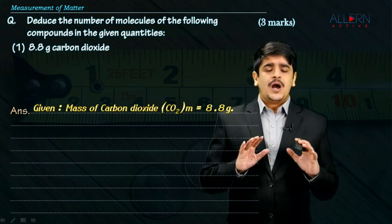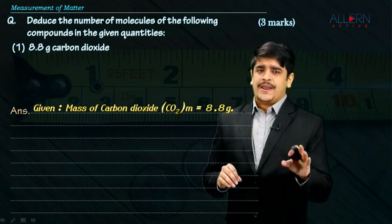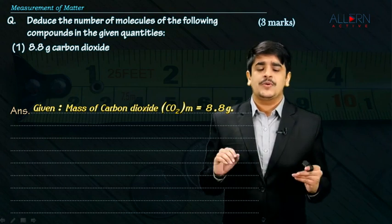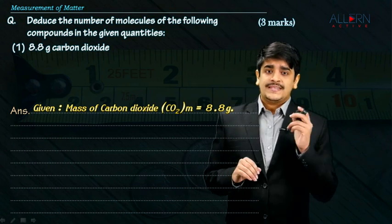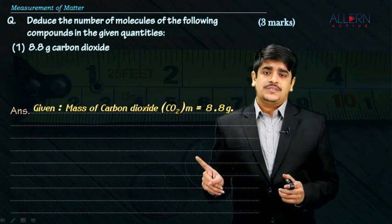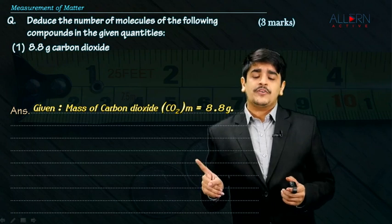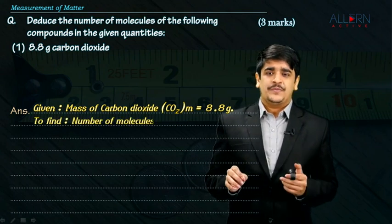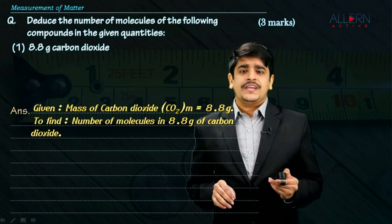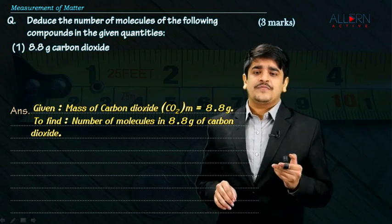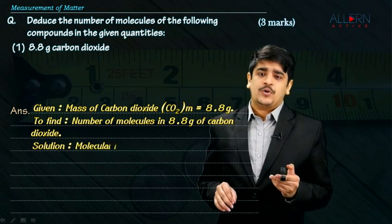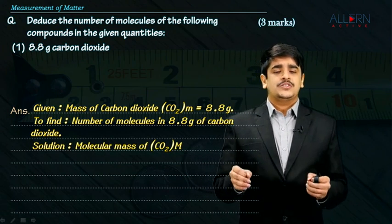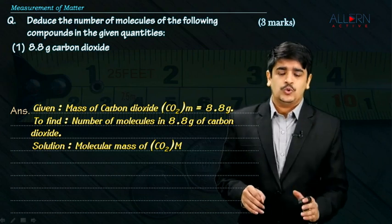What is given here? The mass of carbon dioxide supplied in the sum is 8.8 grams. As I said, you first need the number of moles, and for that you need the molecular mass of carbon dioxide. To find the molecules in 8.8 grams of carbon dioxide, we take the molecular mass of carbon dioxide first into consideration. The formula is CO₂.